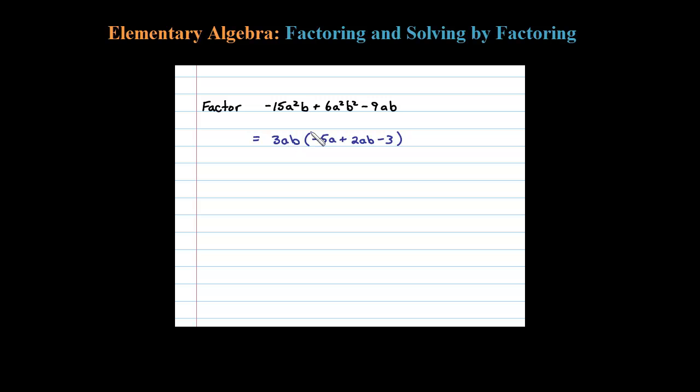So 3ab times negative 5a is negative 15a squared b. 3ab times 2ab is 6a squared b squared, and 3ab times negative 3 is negative 9ab. So yeah, that's factored correctly.